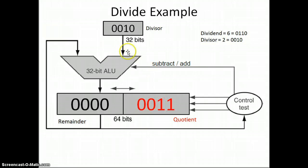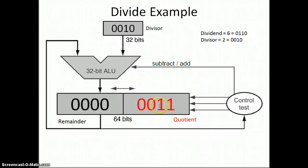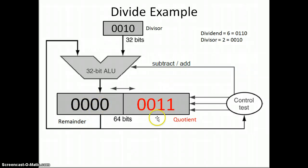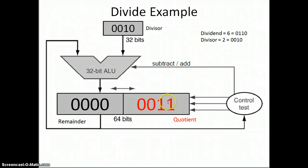The quotient here — our divisor was two, our dividend was six — and the quotient is three, which makes total sense. We have no remainder. If there was anything left over at the end of this process, that would have been our remainder. In MIPS, this register gets copied into the high register, and this one gets copied into the low register.